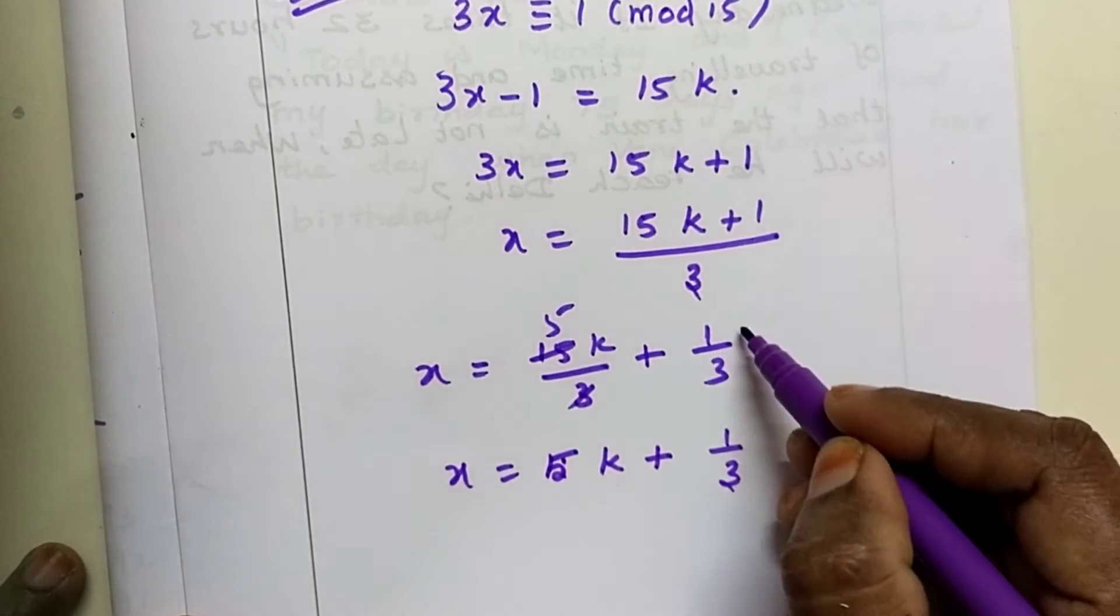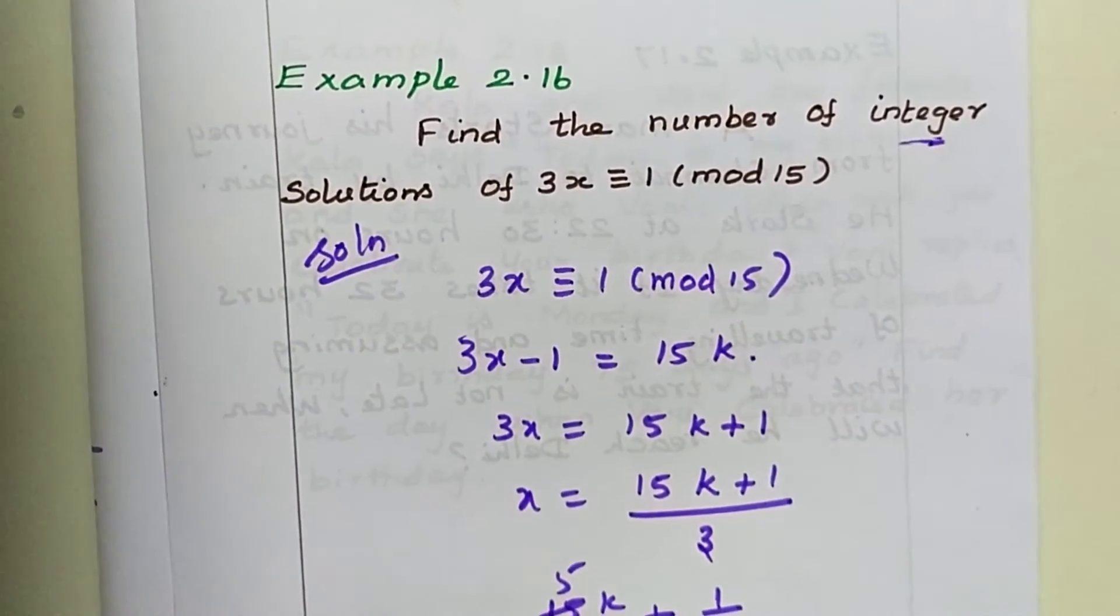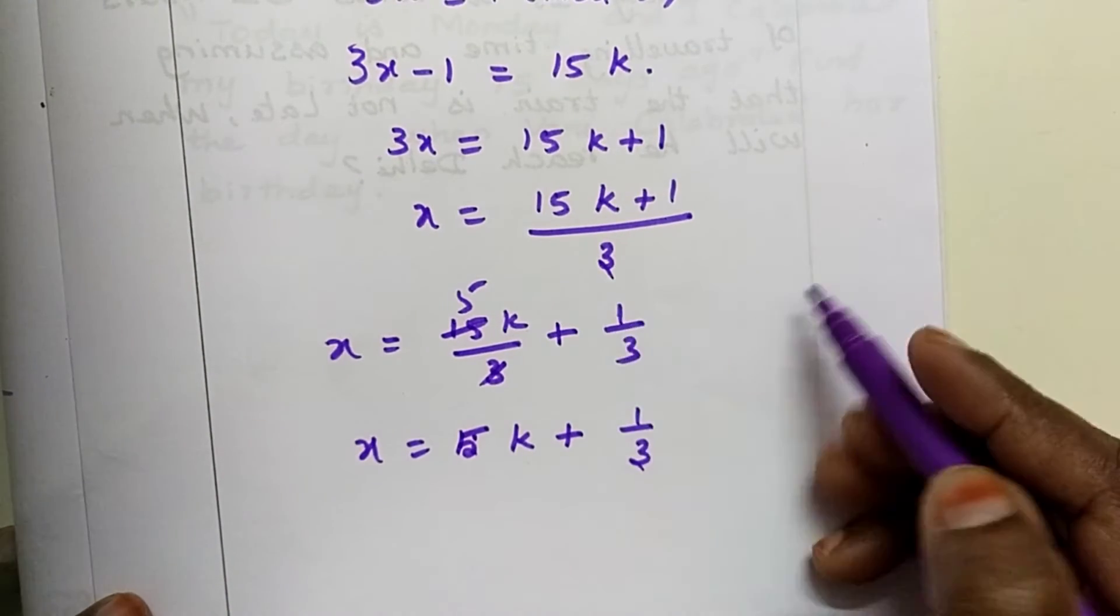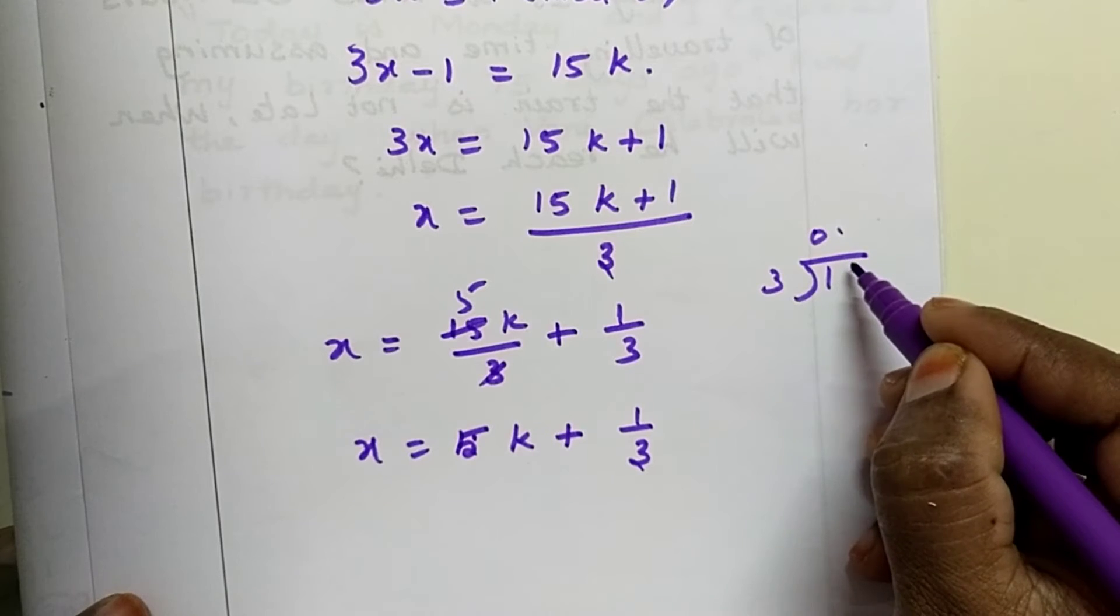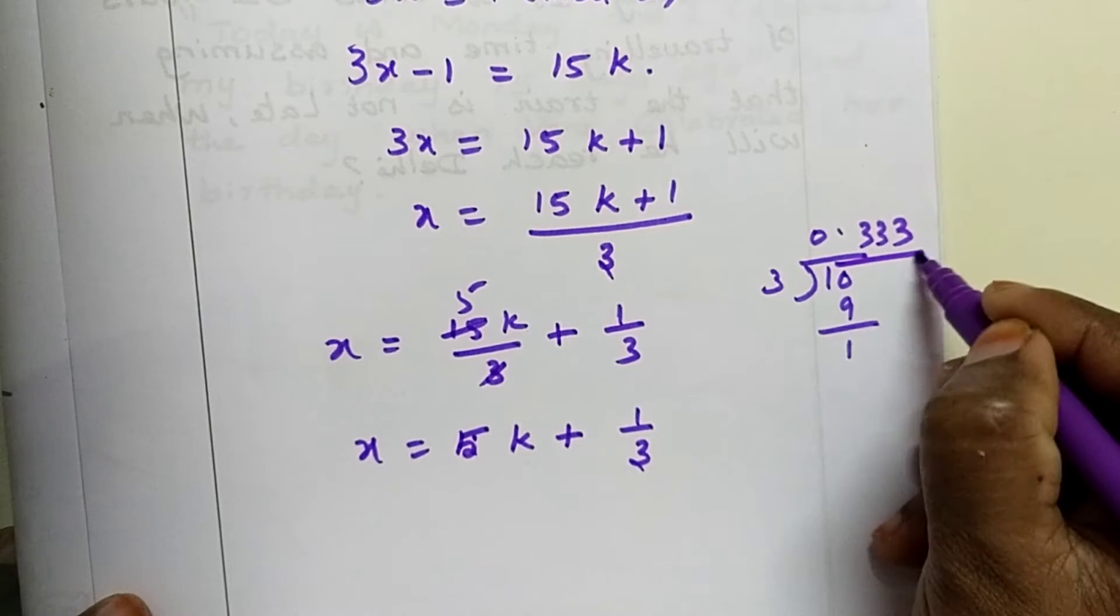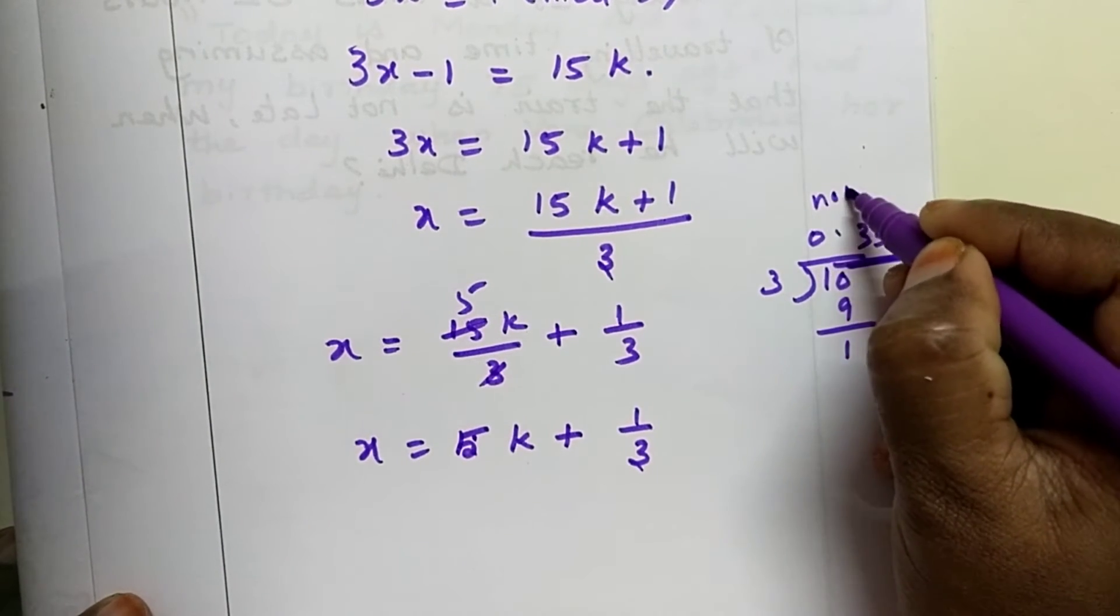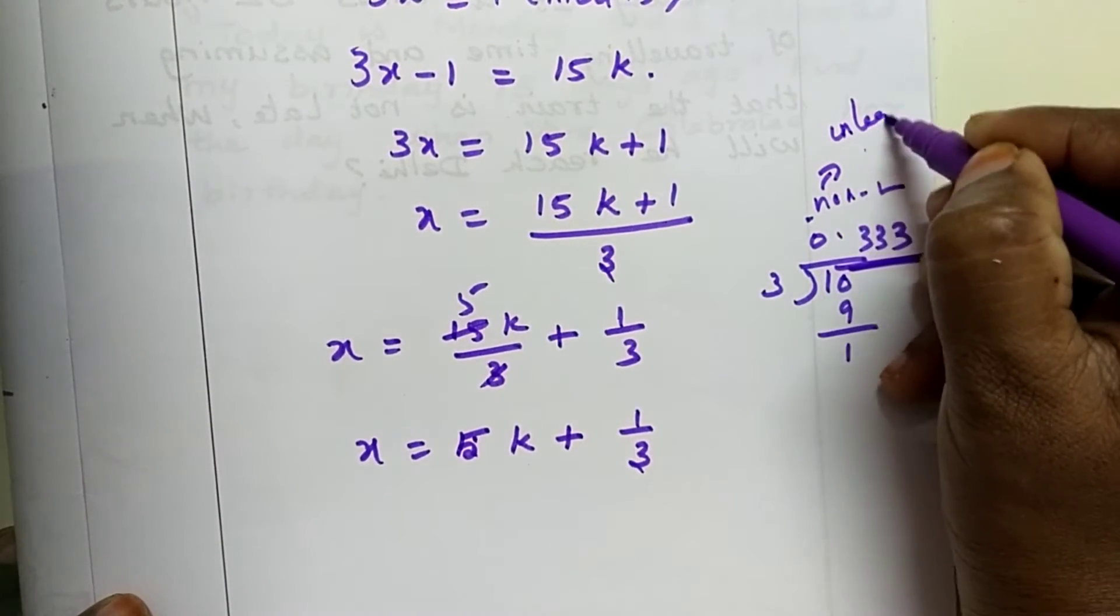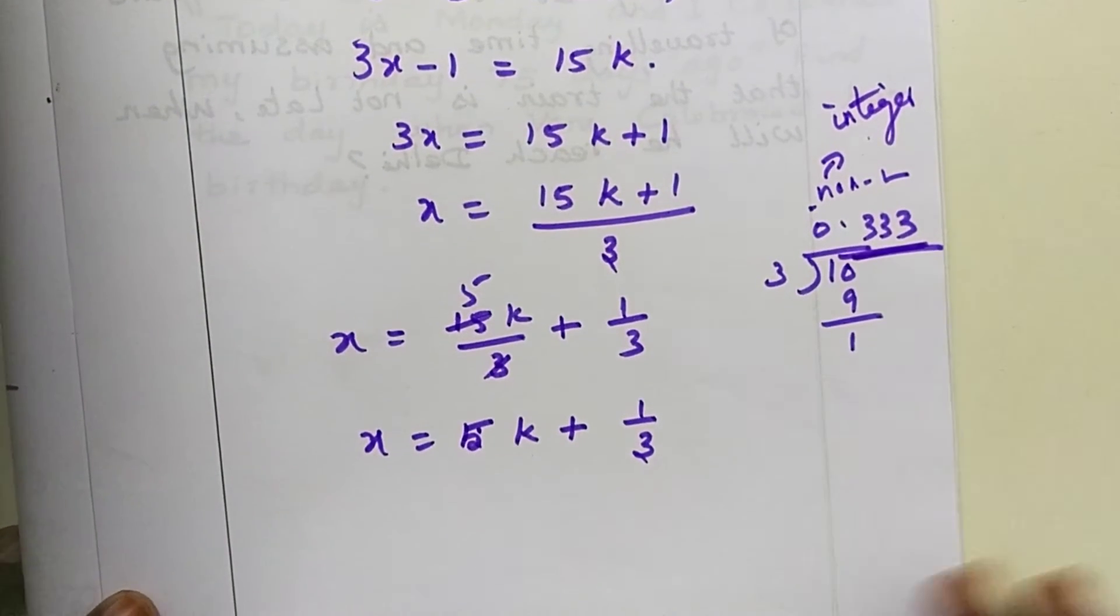Why I did these steps? The question is: find the number of integer solutions. But here this divided by 3 is there. So this 1 by 3, when you divide, you will get 0.333. This is never-ending. This is a non-terminating decimal. So non-terminating decimal does not become an integer.